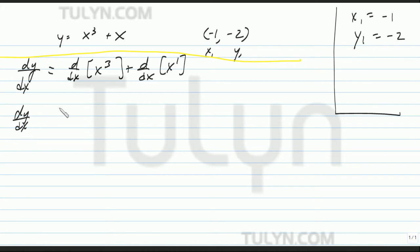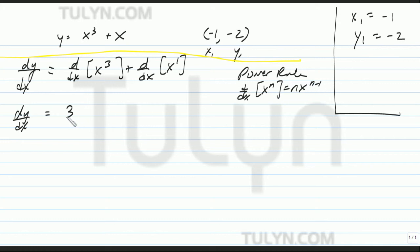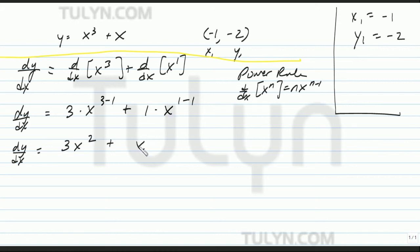Go ahead and apply the power rule to simplify. The derivative with respect to x of x to the n power is n times x to the n minus 1. So it will be 3 times x to the 3 minus 1, plus 1 times x to the 1 minus 1. So the derivative with respect to x equals 3x squared plus 1.